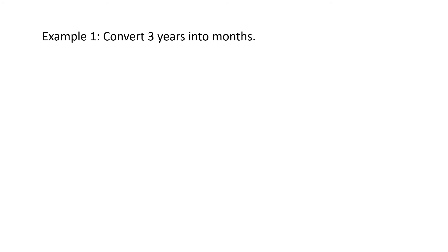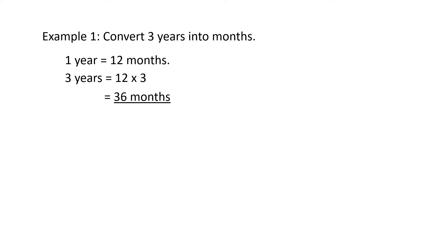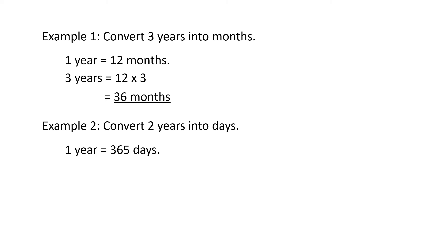Now let's do some examples to convert units. First, convert 3 years into months. We know that in 1 year there are 12 months, so in 3 years we multiply 12 by 3, giving us 36 months. Second, convert 2 years into days. In 1 year there are 365 days, so in 2 years: 365 multiplied by 2 equals 730 days.